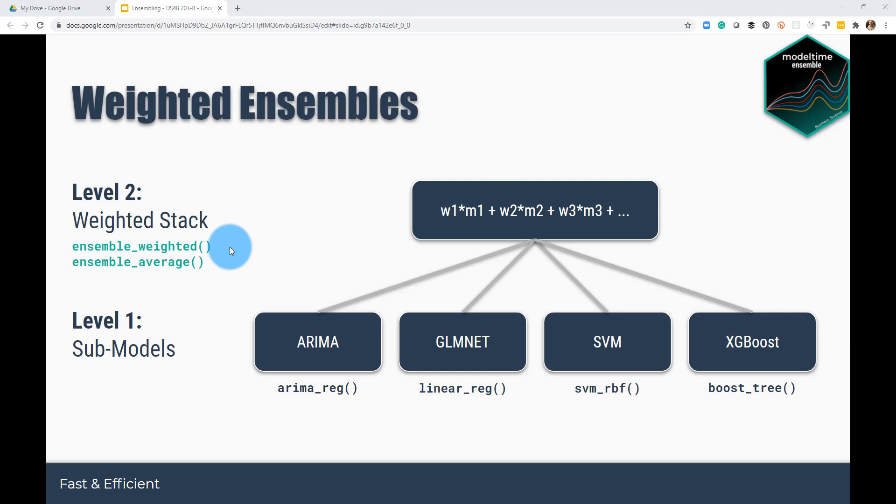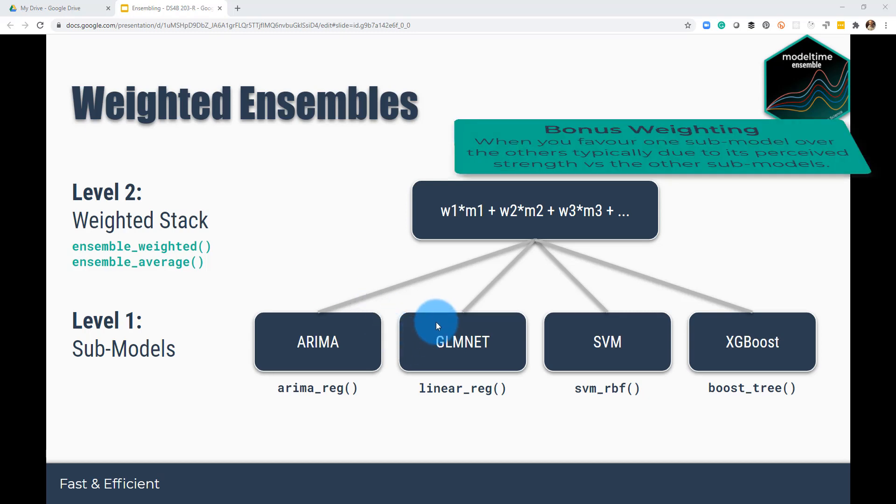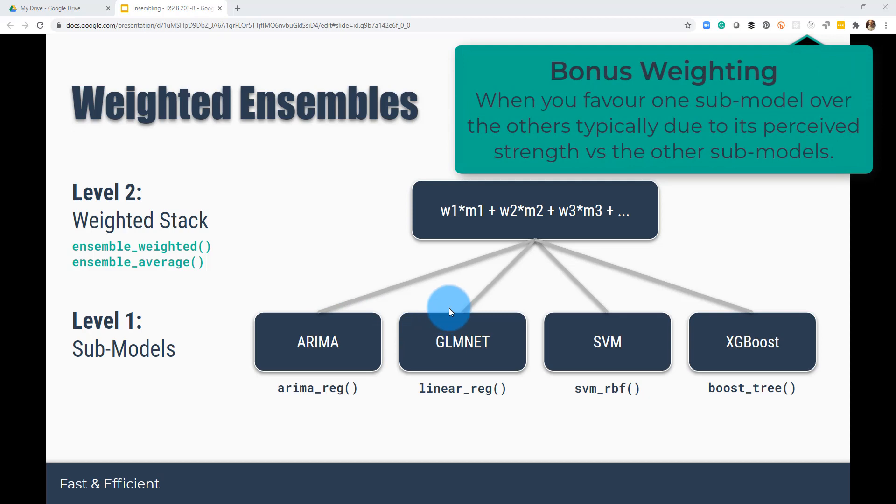The next thing is with weighted averaging. So some of these models may perform better than others, and what we typically do is we weight them according to the strength of the model. So you might rank them in some fashion, or you might give extra bonus weighting. If your GLMnet model is performing the best, you might weight that with a ranking or a loading of say five, and the rest of these with maybe ones. And then what will happen is that'll get scaled and distributed.